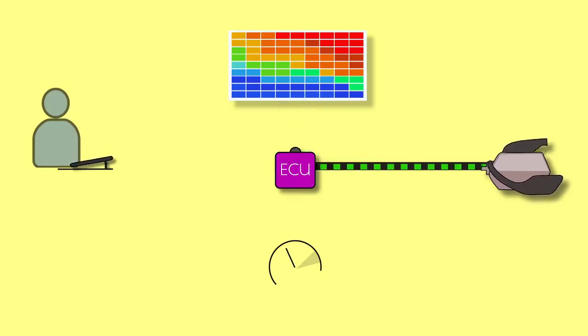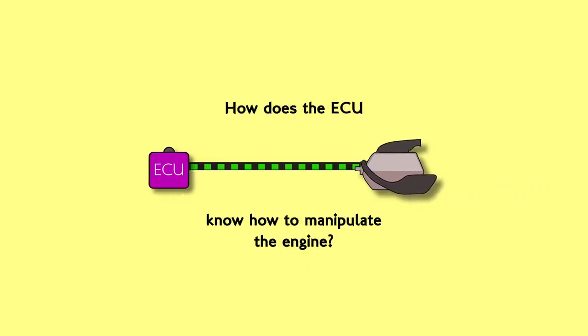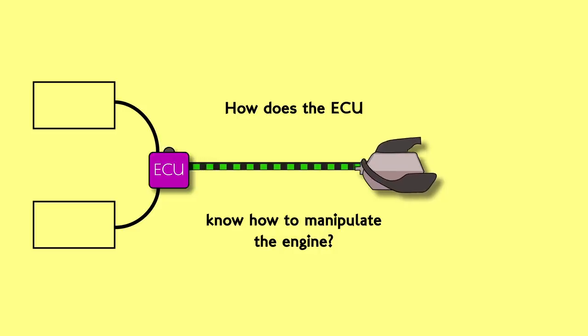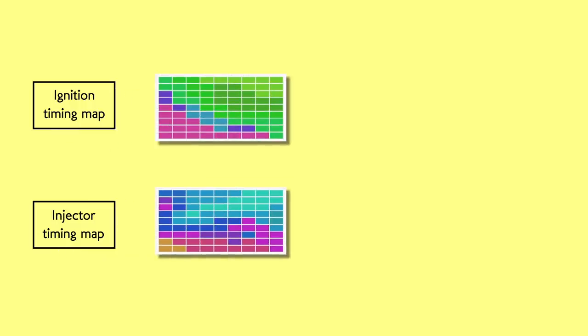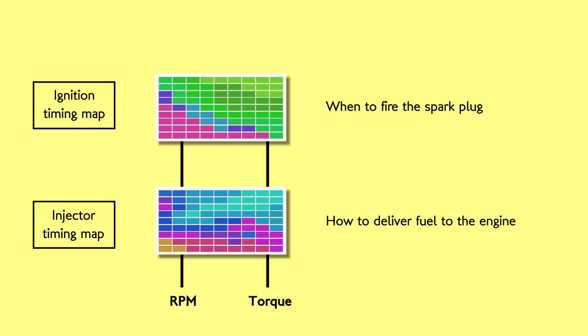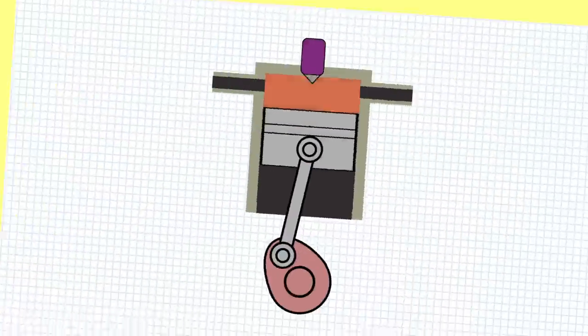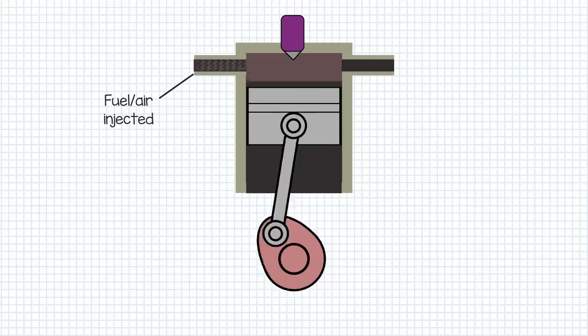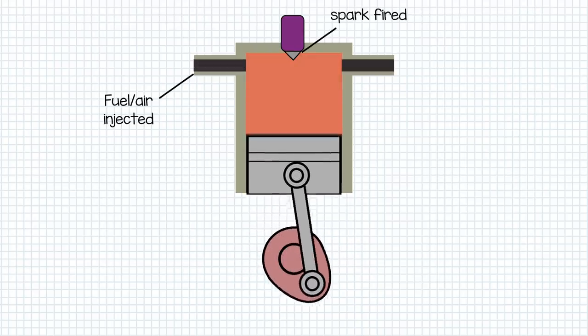So does the ECU then get the engine to deliver the torque demanded by the driver? Well, it uses a number of other maps to deliver inputs into the actual mechanics of the engine to deliver the demanded torque, particularly the ignition timing map and the injector timing map. These two maps are essentially just tables again that tell the engine when to fire the spark plug and how much fuel to deliver into the cylinder by looking at the engine speed or RPM and the amount of torque currently working the engine. We're not going into the whole mechanics of a combustion engine here, but essentially engine power comes from a mixture of air and fuel being injected into the cylinders and a spark plug igniting to flash combust that fuel mix into driving the pistons.